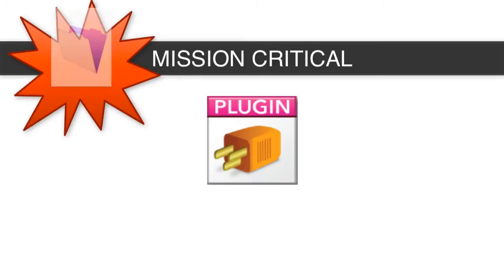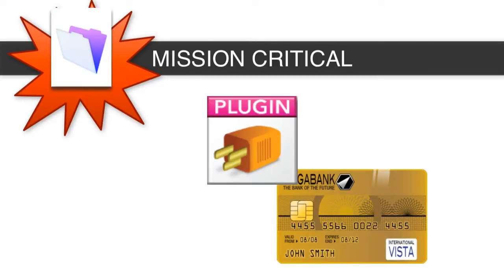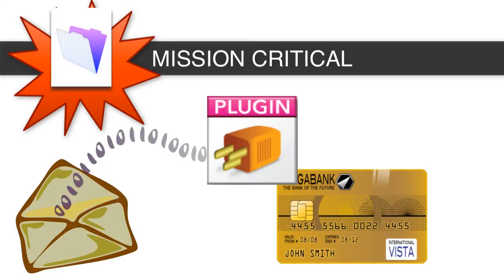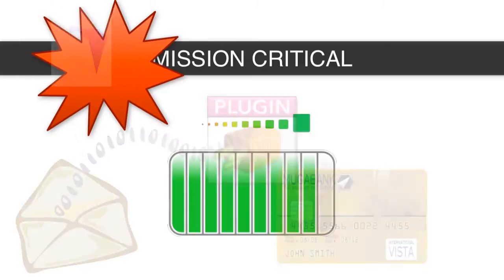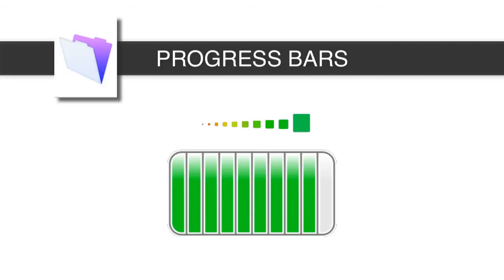I never try to use plug-ins unless they bring some sort of mission-critical functionality, like processing credit cards or mission-critical emailing capability — then of course you need a plug-in. Progress bars generally aren't mission critical, but they can be really handy. If you can employ them into your FileMaker solution without a plug-in and do it pretty easily, well then that's a great idea.